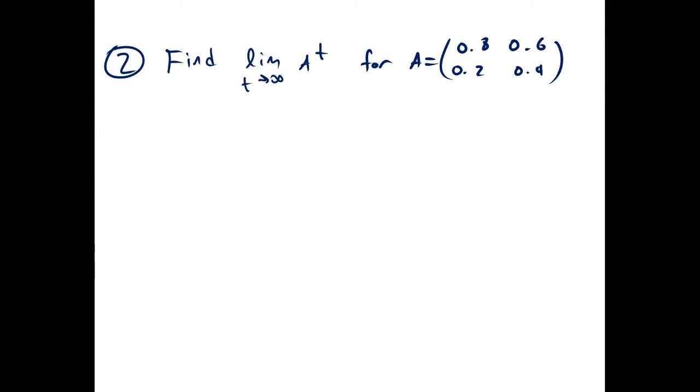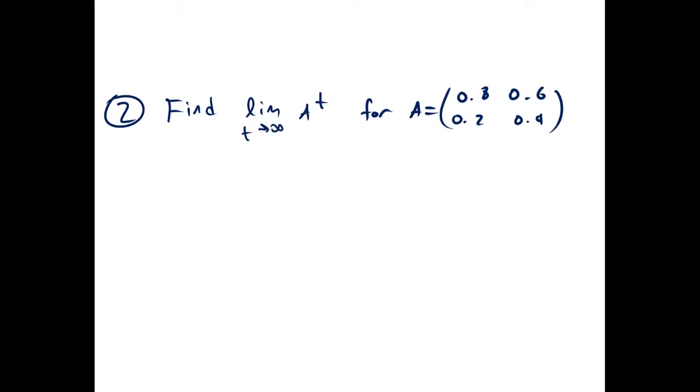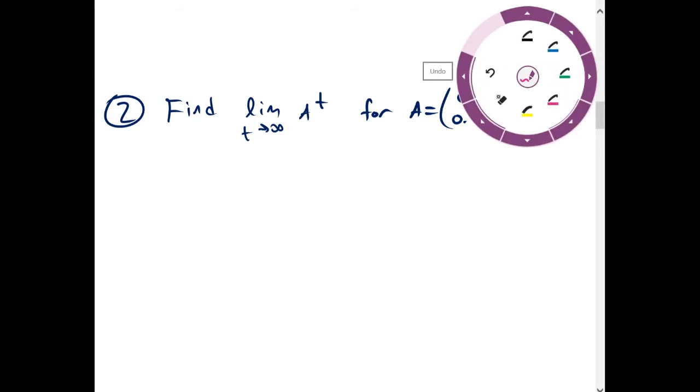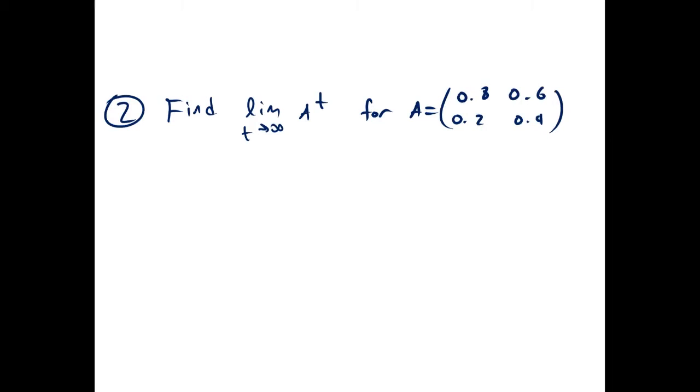For question two, we're going to find the limit as t approaches infinity of A to the t for A equals (0.8, 0.6; 0.2, 0.4). To do this by multiplying A by itself infinity times is impossible, so we're going to turn this into a diagonal matrix with change of basis.